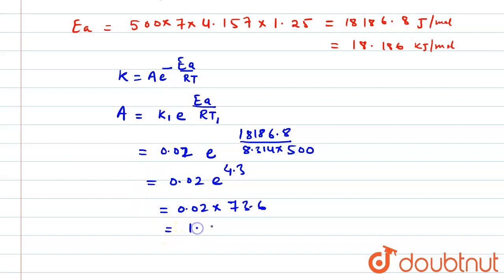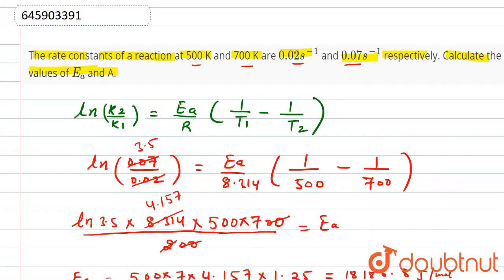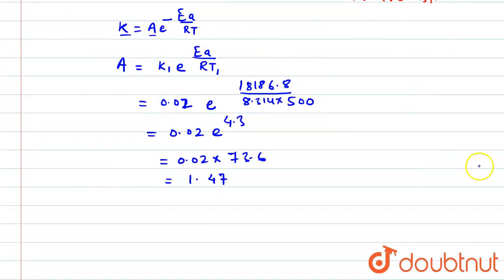It comes out to be 1.47. Now what will be the unit? The unit of k and A will be equal because this will be unitless. Unit of k, because it is a first order reaction, will be per second. So unit of A is also per second.